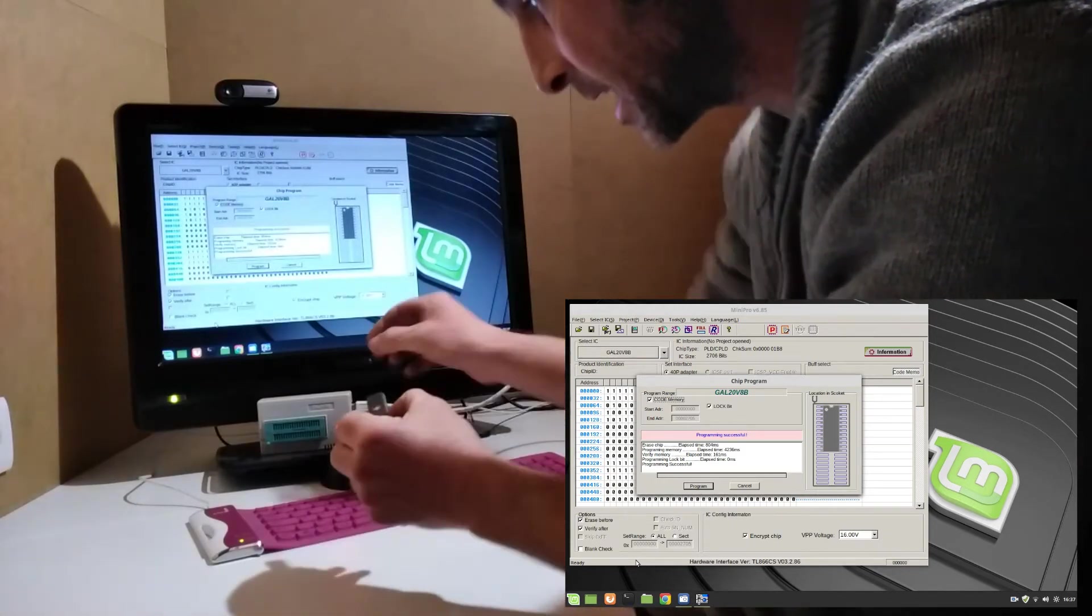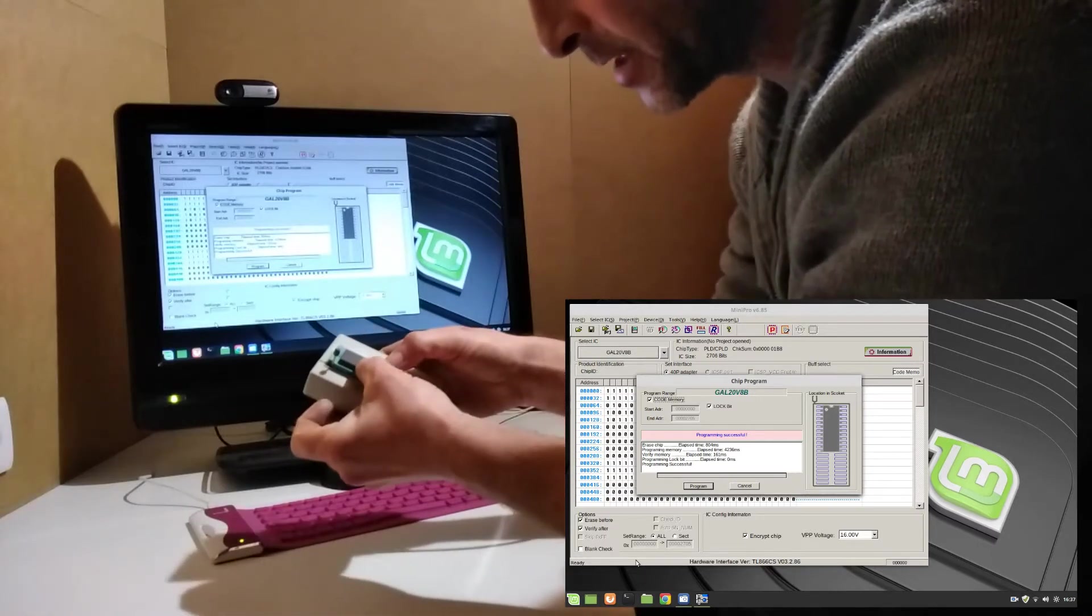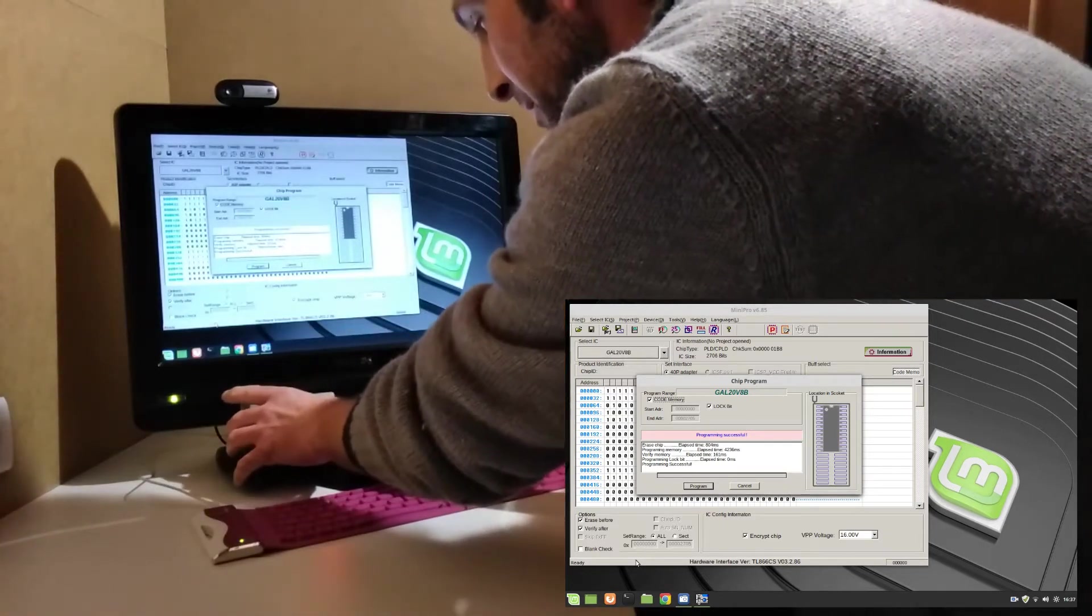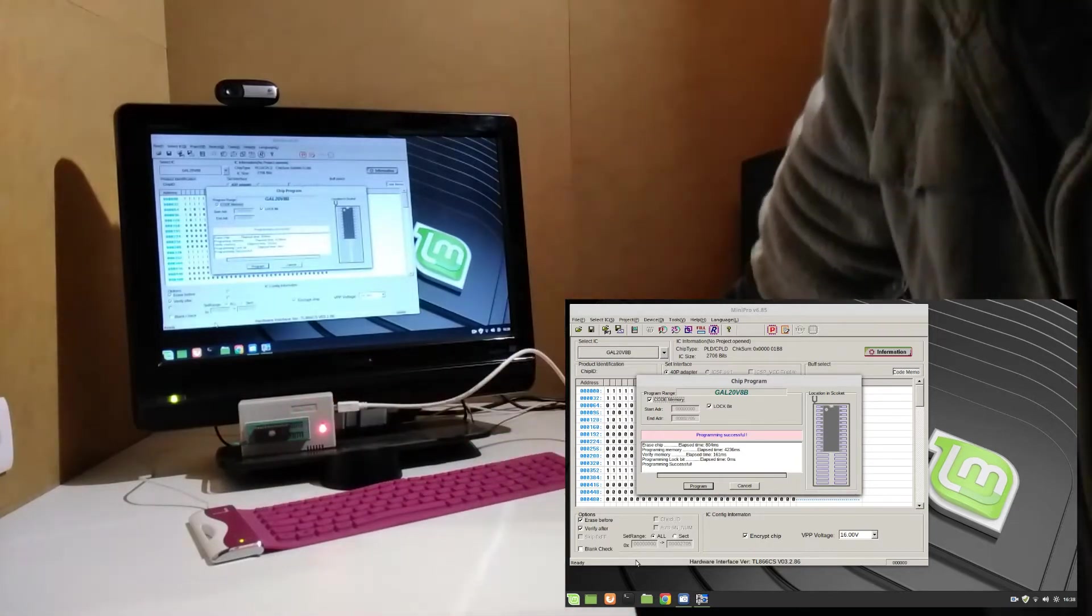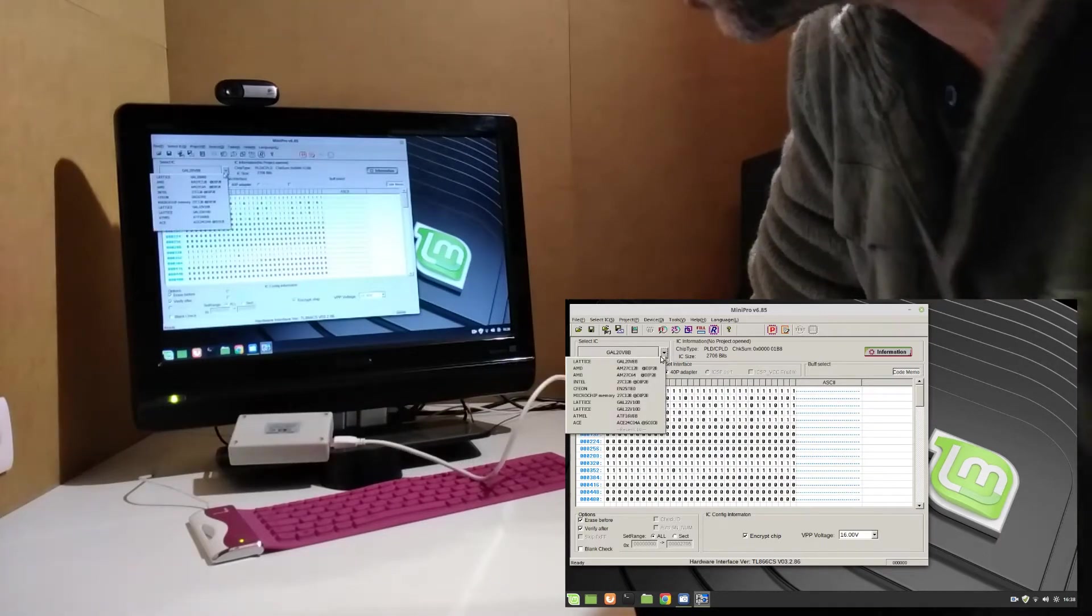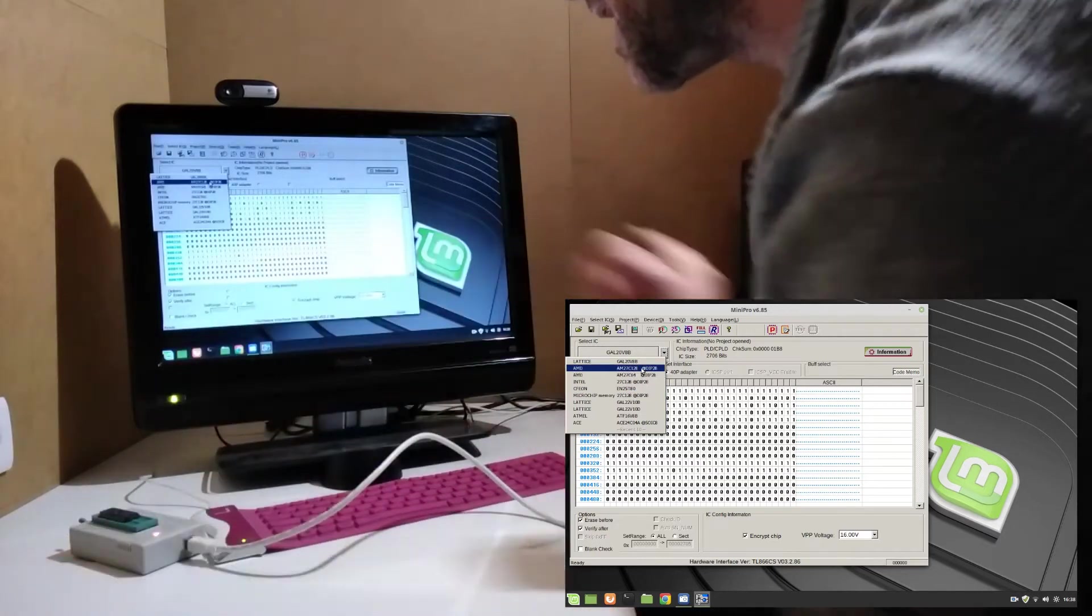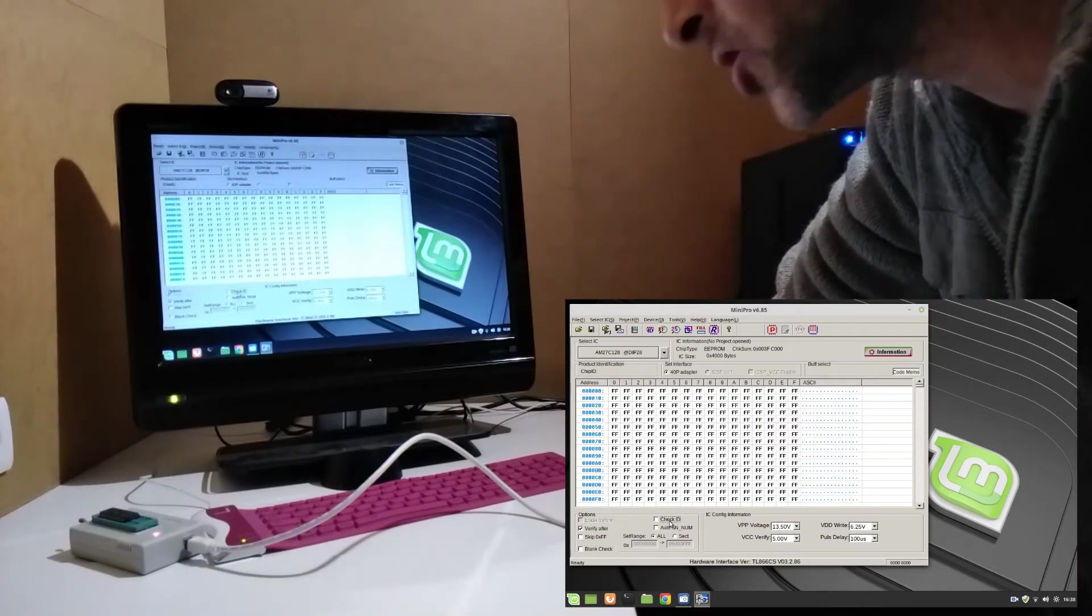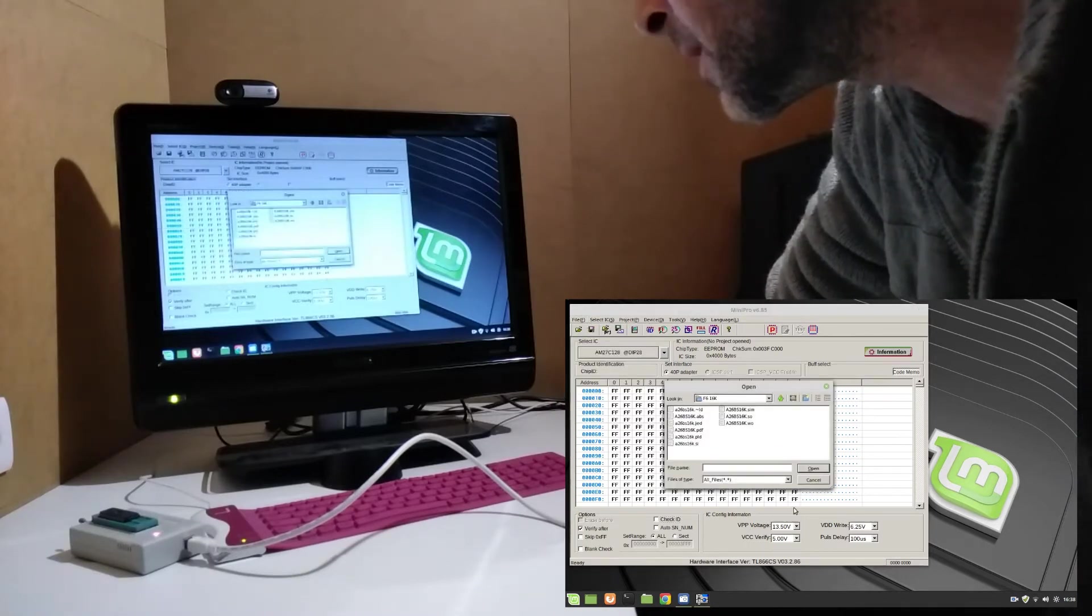Now exactly the same for this guy here. This is my 16-kilobyte ROM chip which has been erased completely. This is a 27C128. Because this programmer doesn't support the exact type of chip that is, I need to select something close enough to it. I'm going to select this AMD here which is pretty much the same chip, but I need to uncheck the check ID so it'll program it anyway.